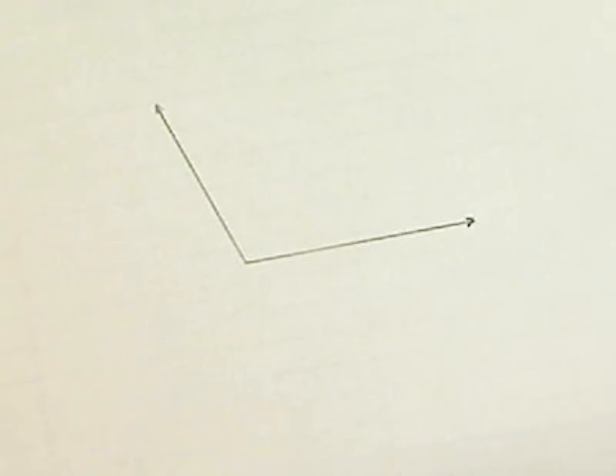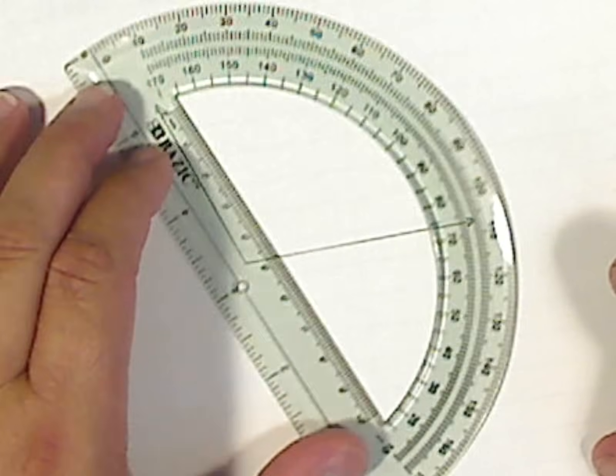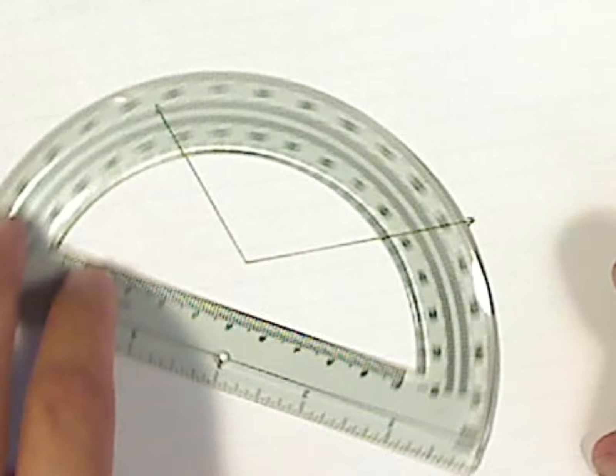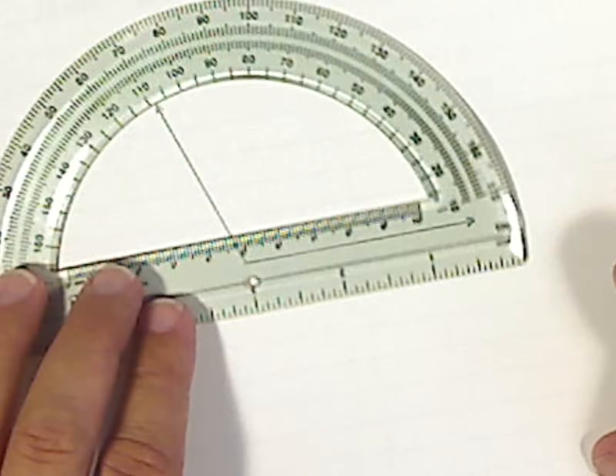What I have here is an angle which I can measure from this side or I can measure from this side.